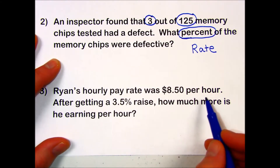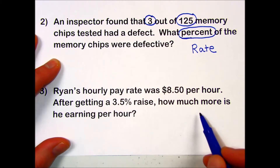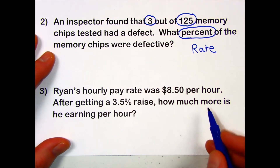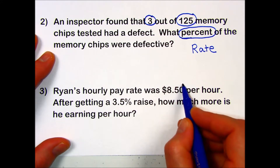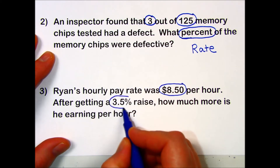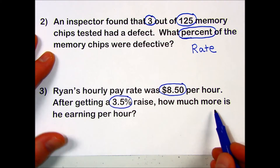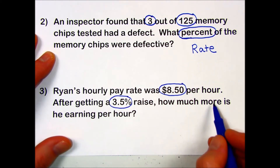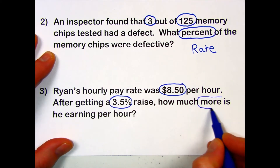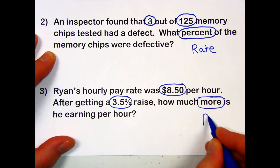One more problem: Ryan's hourly pay rate was eight dollars and fifty cents per hour. After getting a three point five percent raise, how much more is he earning per hour? The base is where he started — eight dollars and fifty cents per hour — and the rate of his raise was three and a half percent. How much more is he earning per hour? That's the part, his raise, and that's our unknown.